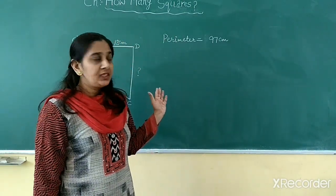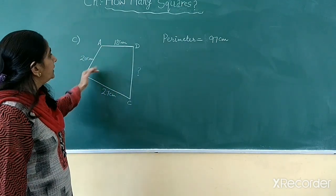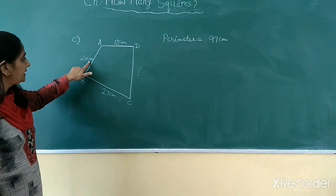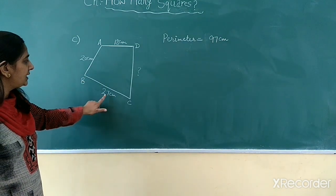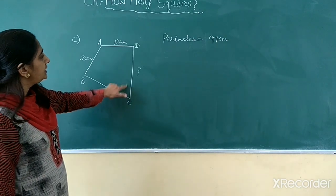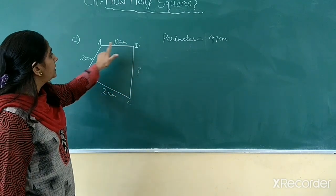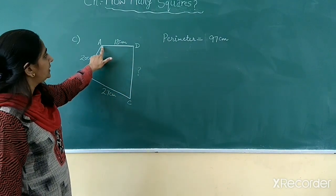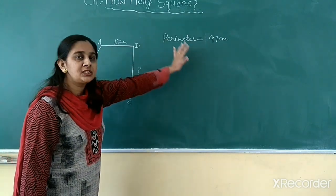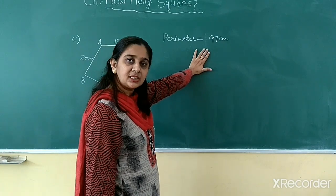Now look at part C. In part C, this figure is given to you. The given figure is a quadrilateral. AB is the first side of this quadrilateral and its length is 20 centimeter. BC is the second side and its length is 27 centimeter. CD is the third side and its length is missing. DA is the fourth side and its length is 18 centimeter. The perimeter of this quadrilateral is given to us, which is 97 centimeter.